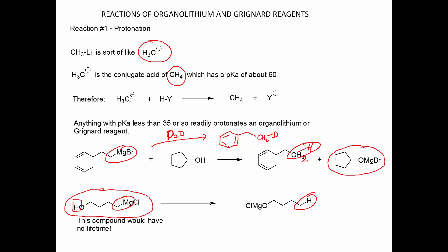So we would not want to make a Grignard reagent that has an alcohol functional group in it. Why is there this limitation of 35 or so — why don't we just say 59? This is because the organolithium bond is mostly covalent, not truly an ionic bond. Because it's not truly a free anion, it doesn't just randomly exchange protons with everything. The proton has to have some level of acidity before it can be removed by the Grignard reagent.